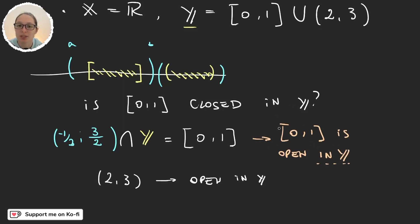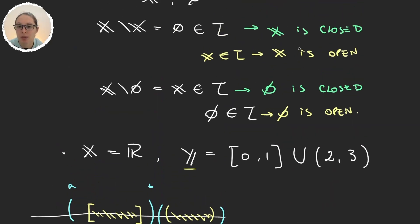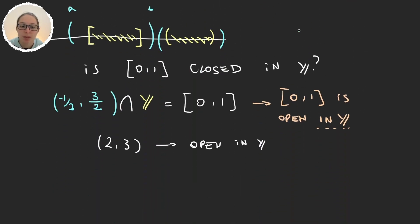I asked if this set was closed in Y and my answer was well it's open. But we know this doesn't really answer things because here we had examples of sets that were open but were also closed. So to know if a set is closed what we have to do is take the complement in the space where we want to see if it's closed or not.